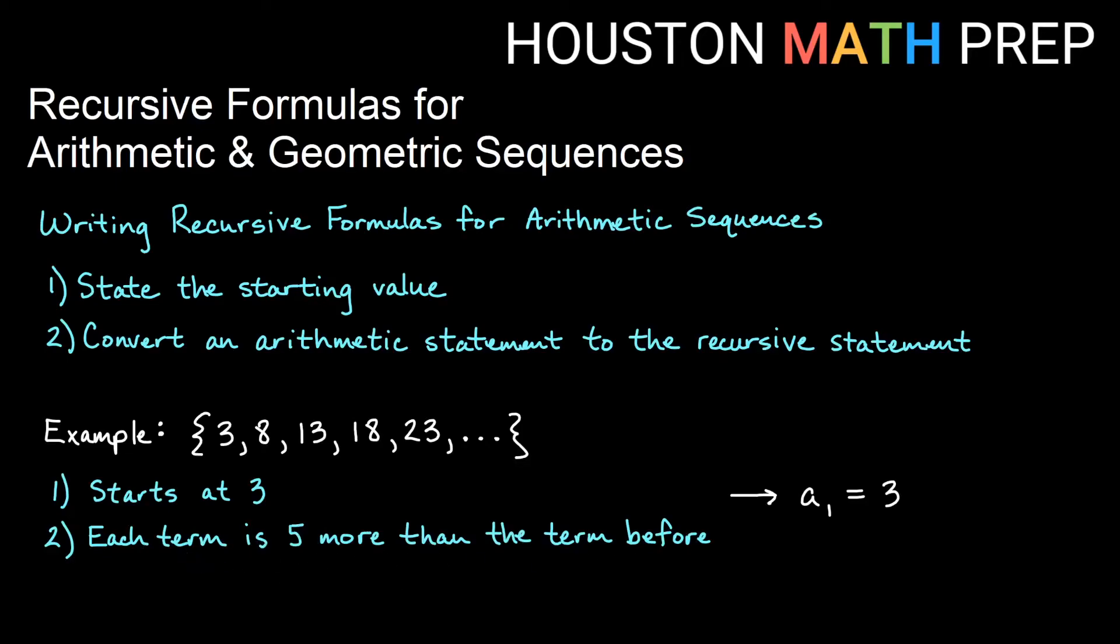Each term is 5 more than the term before. So each term is going to be my a sub n and that will be 5 more than the term before it, which is the term before plus 5 as I've written it here in the equation. We'll make that statement that that will be for any term after the first term because the first term is 3. So use this formula for any term after that, in other words, starting at term number 2.